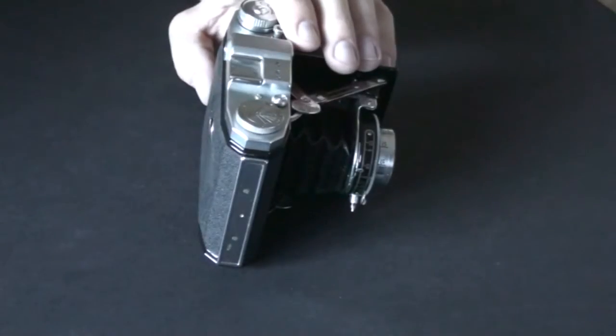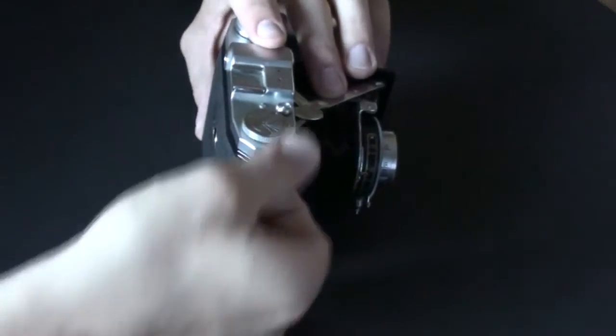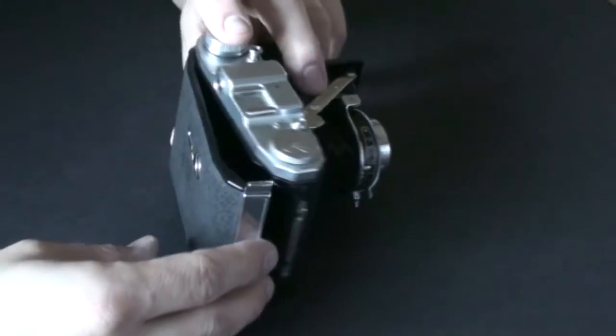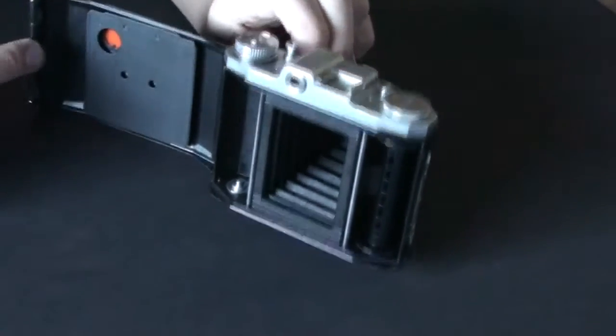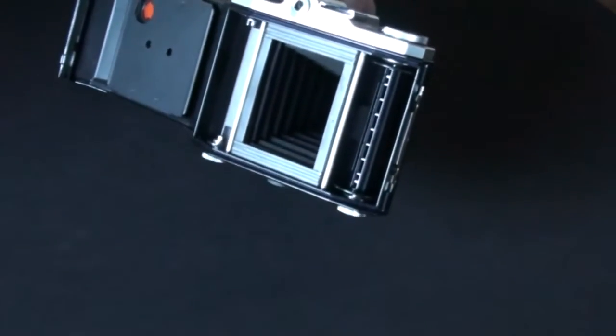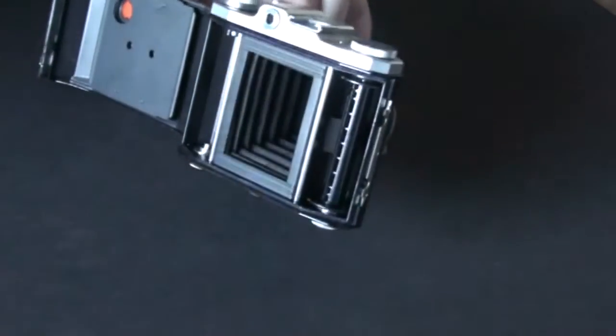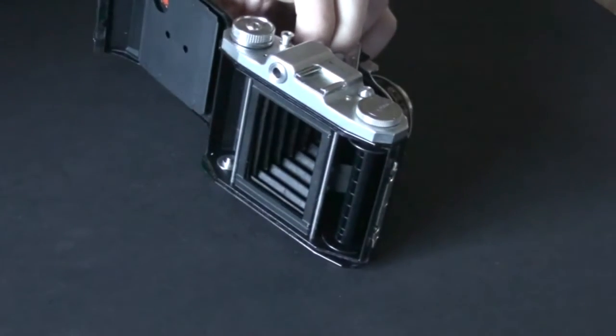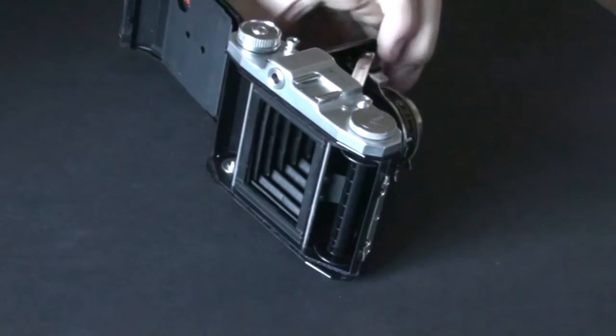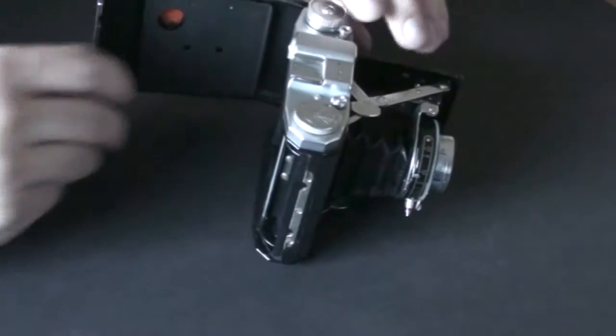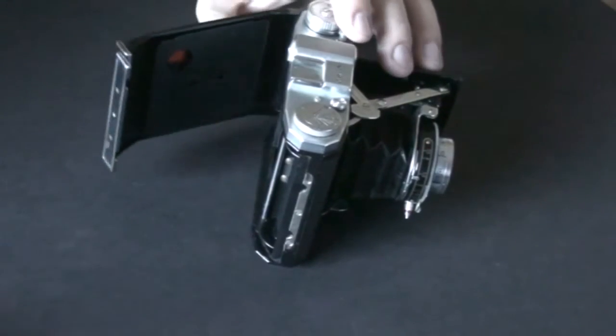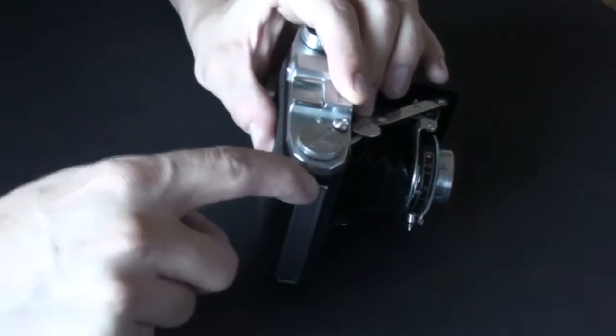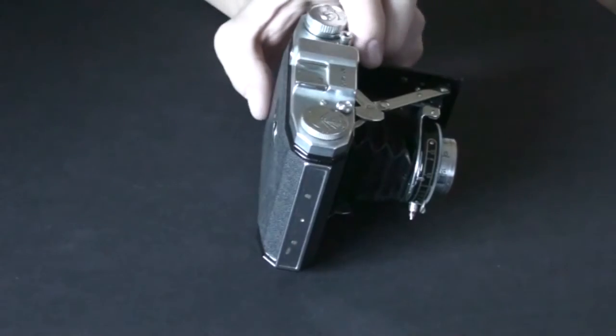This here is your release tab to open the back. So, you simply pull it up, and the back swings open. And as you can see, this is 4.5 by 6 centimeter format camera. It's still a medium format, but it's half frame medium. In order to close it, you simply swing the back back in, and press the button, press the tab down.